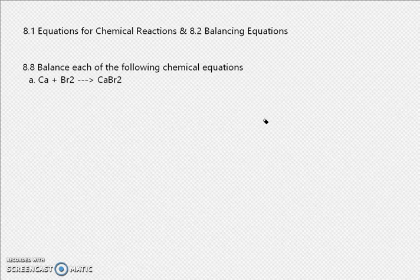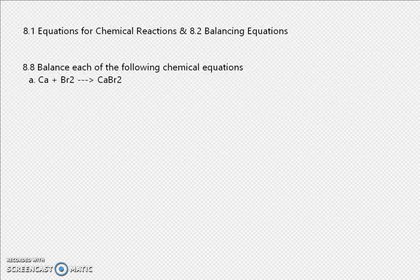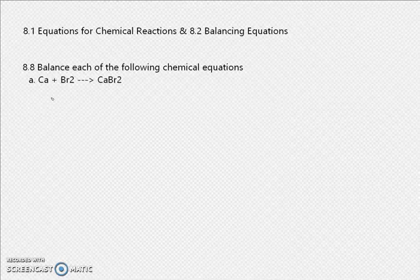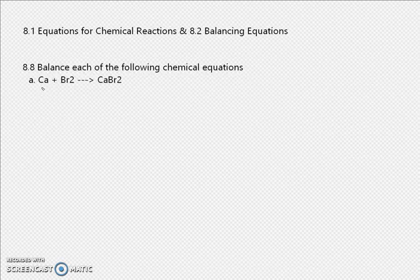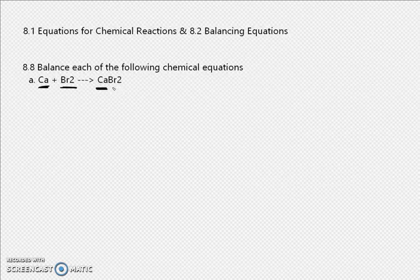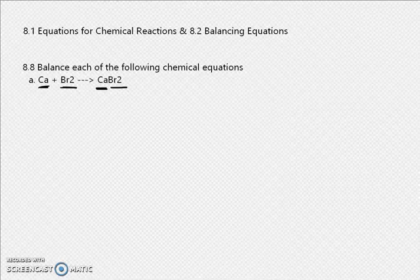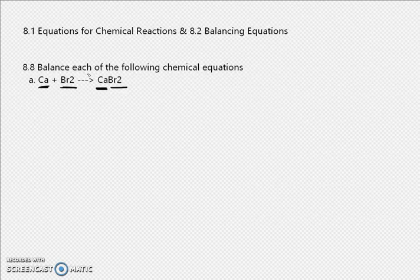Sections 8.1 and 8.2 are basically the same — they just want you to balance the equation. Here's an example of a balanced equation: there's 1 Ca and 2 Br on this side, and 1 Ca and 2 Br on the other side. See how it's balanced? You have the same number of each element on both sides.